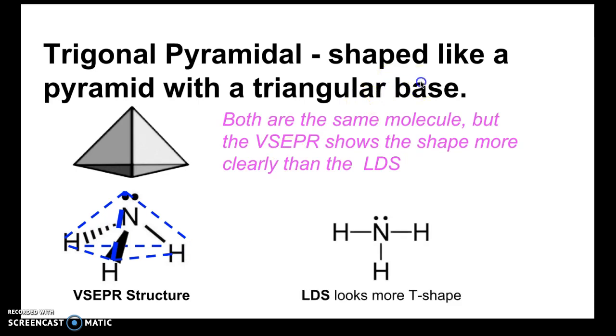If you compare once again the NH3 VSEPR structure to the Lewis dot structure, you would see that the Lewis dot structure once again doesn't really show you the correct bond angles or shape. The shape of NH3 looks again more like T-shaped than it does trigonal pyramidal. So that's why VSEPR structures are important for determining shapes.